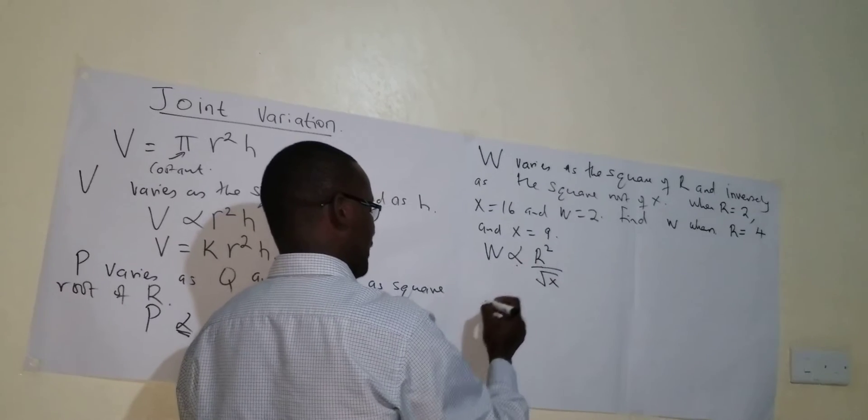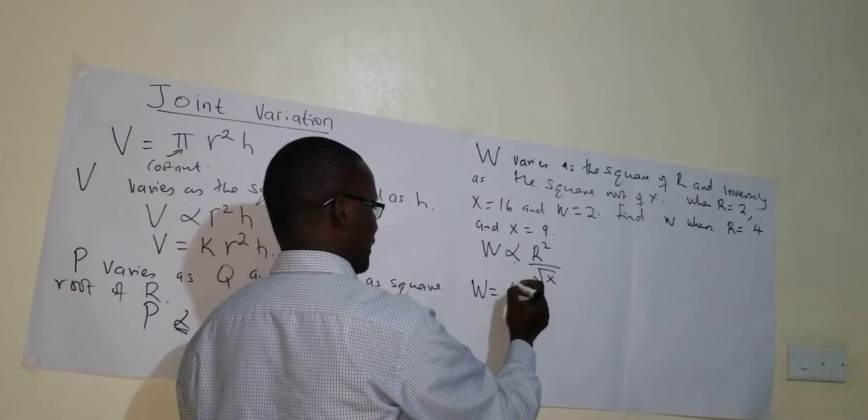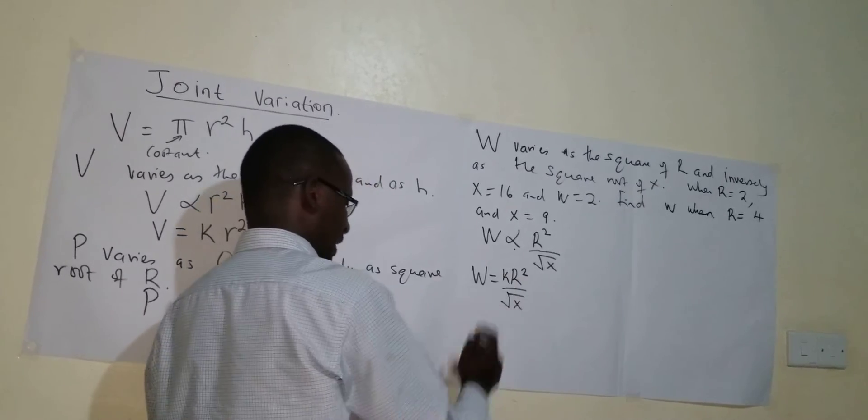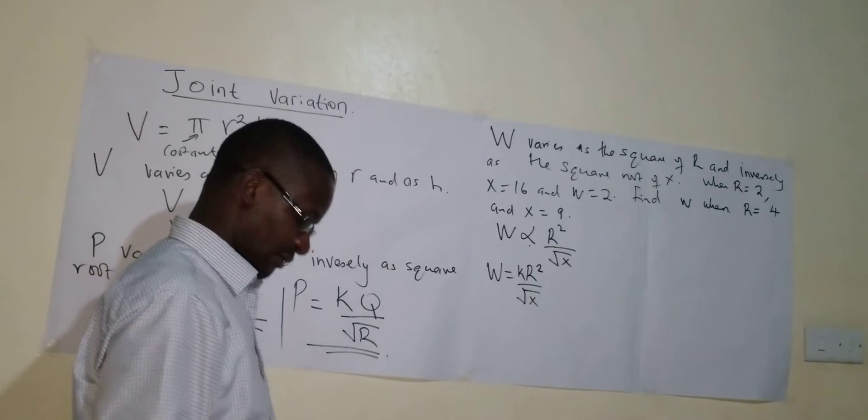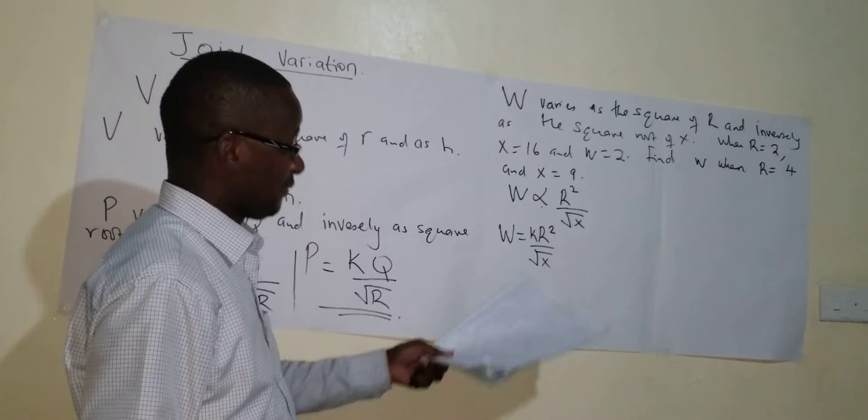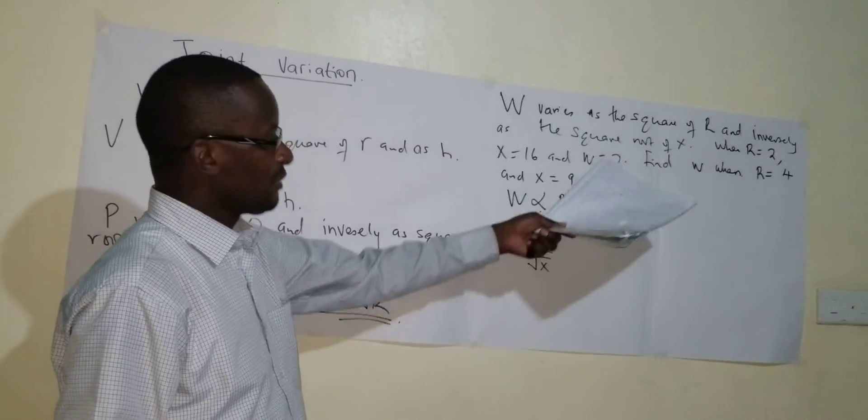So I remove the sign, I put equals. So I get K as the constant of proportionality. You don't have to use K, I'm just used to it. So that would be the equation. But we have not finished, we have not gotten K. So we use the information given.